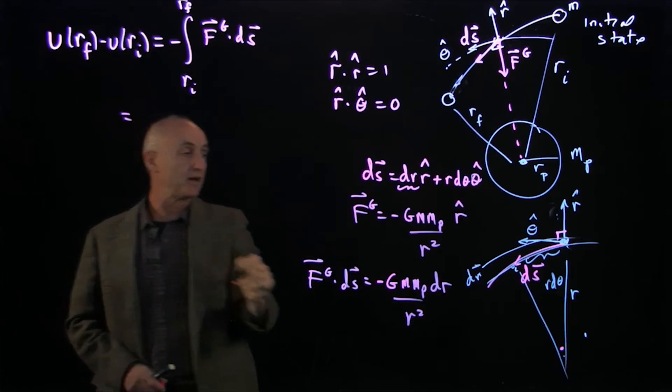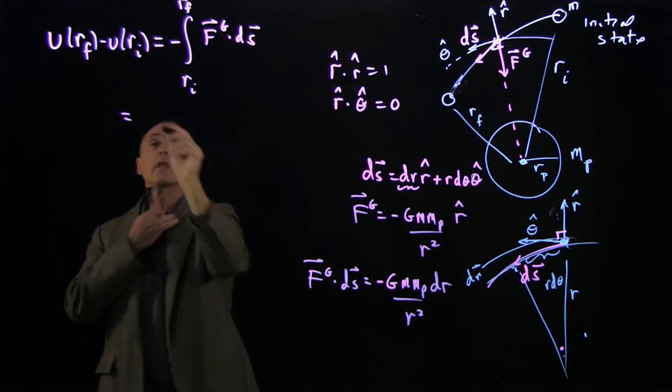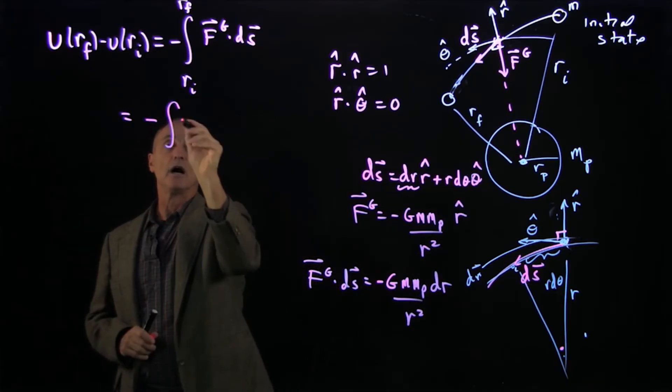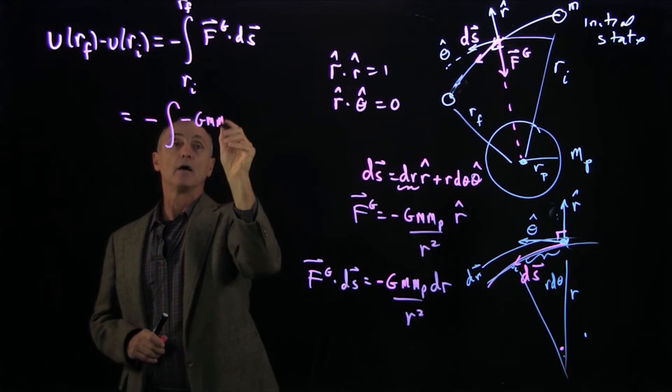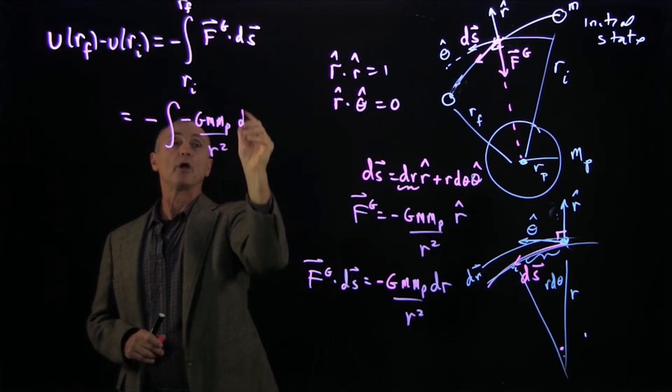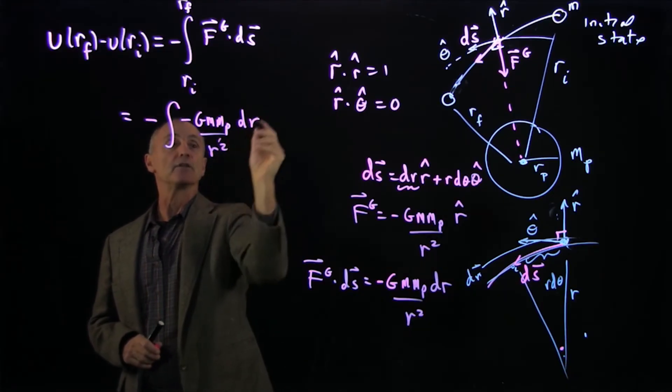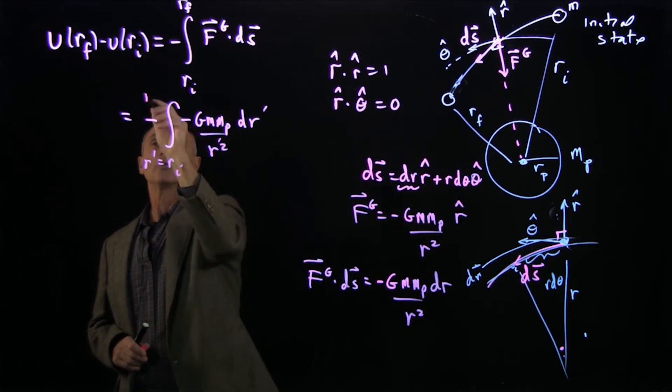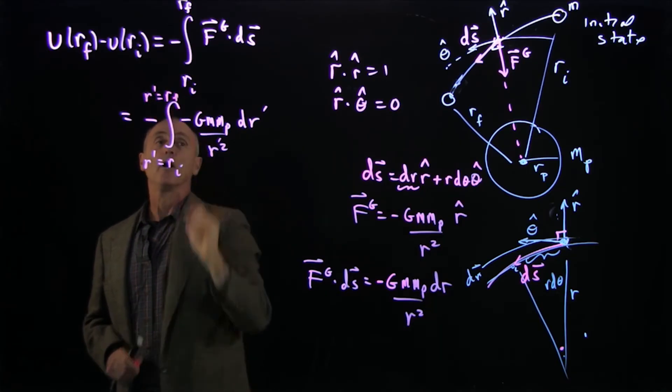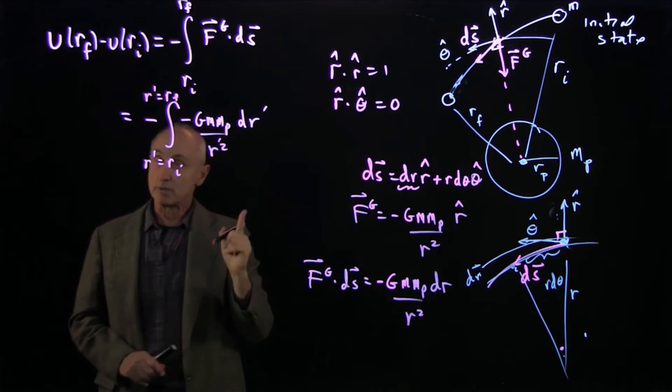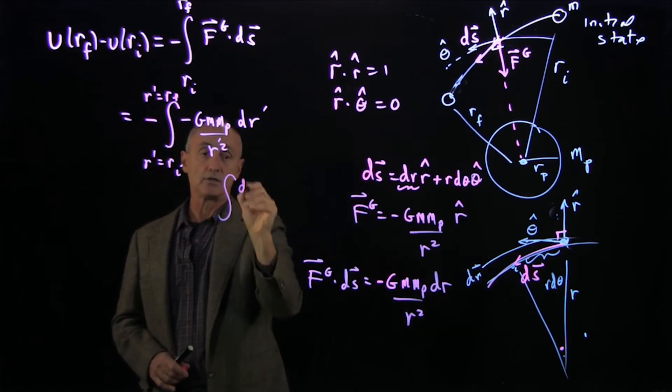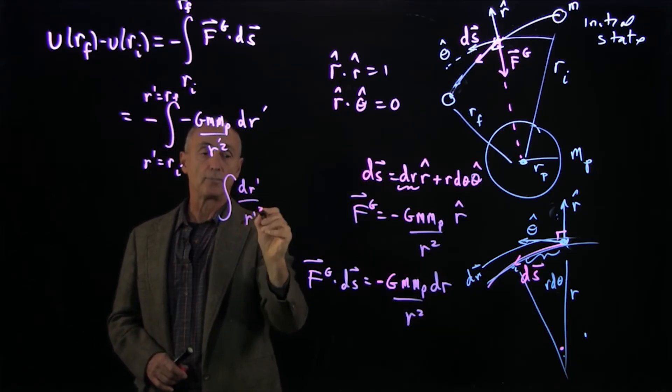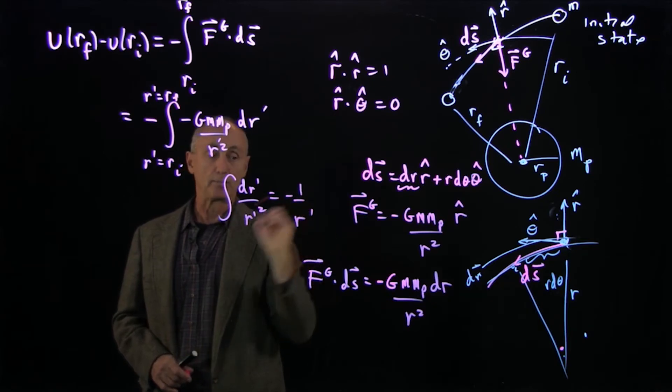And now we have actually a minus sign in the definition, another minus sign coming from the dot product. And let's make this our integration variable, r prime, from r initial to r prime equals r final.